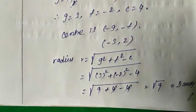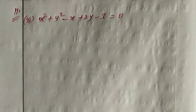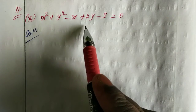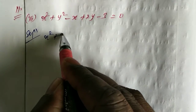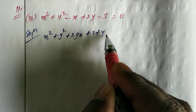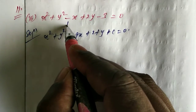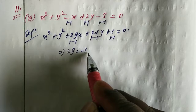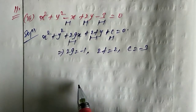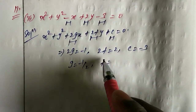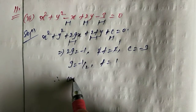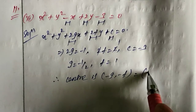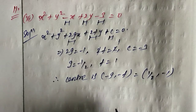Now the third subdivision of the 11th question. Given: x squared plus y squared minus x plus 2y minus 3 equal to 0. Using the form x squared plus y squared plus 2gx plus 2fy plus c equal to 0, comparing: 2g equals minus 1, 2f equals 2, and constant c equals minus 3. So g equals minus 1 by 2, and f equals 1. Therefore center is minus g comma minus f, which is 1 by 2 comma minus 1.